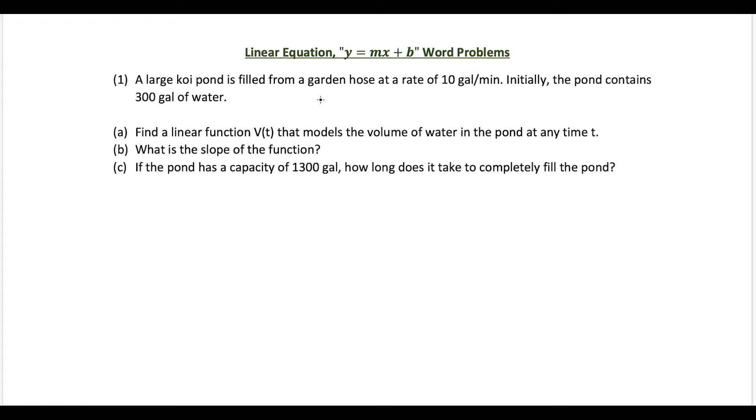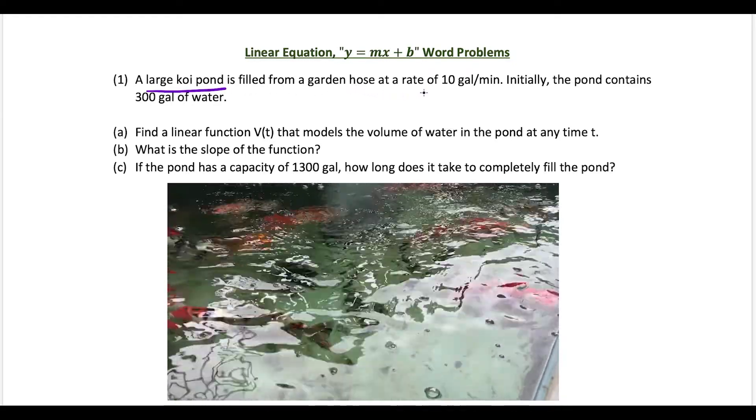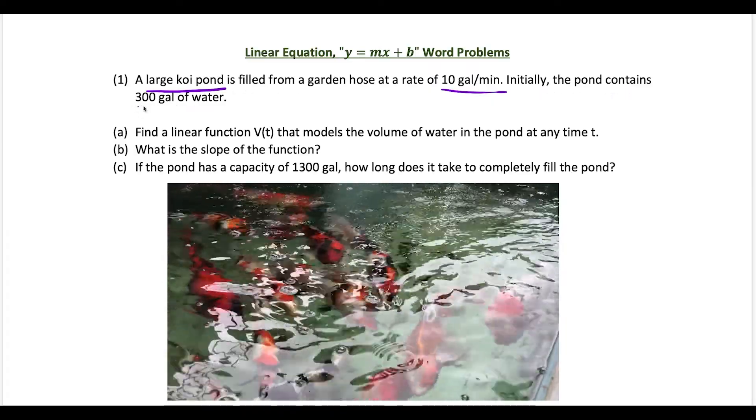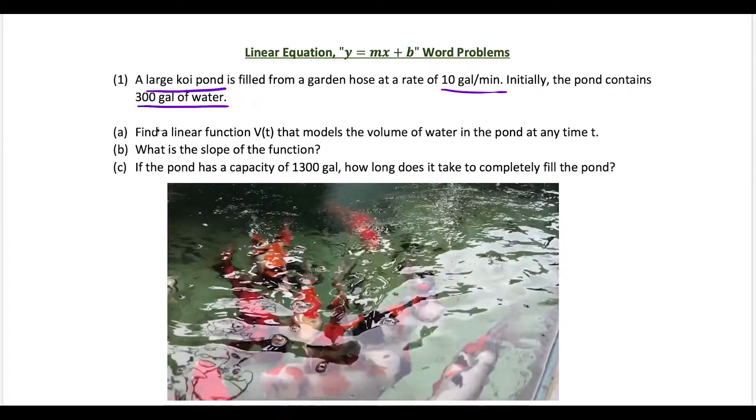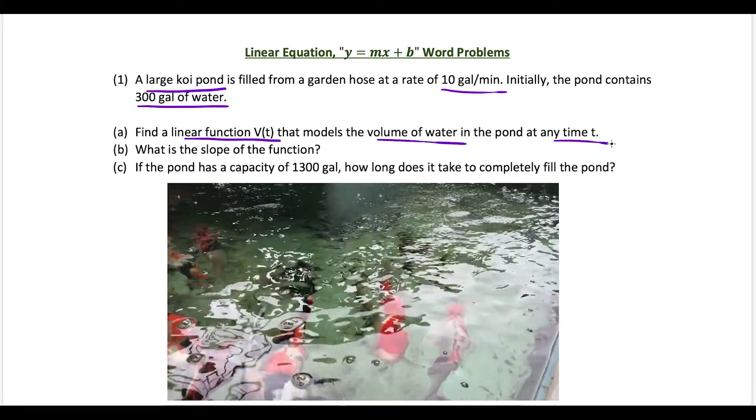I'm Vin, and today I want to take a look at some linear equation word problems. The first question here: we have a large koi pond being filled from a garden hose at a rate of 10 gallons per minute. Initially, the pond contains 300 gallons of water.